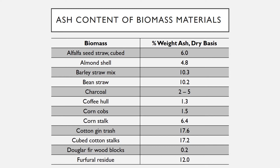Corn cobs: 1.5% weight ash in dry basis. Corn stock: 6.4% weight ash in dry basis. Cotton gin trash: 17.6% weight ash in dry basis. Cubed cotton stalks: 17.2% weight ash in dry basis. Douglas fir wood blocks: 0.2% weight ash in dry basis.